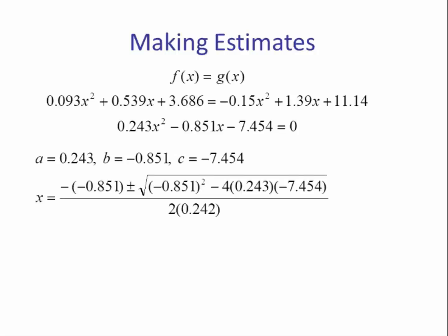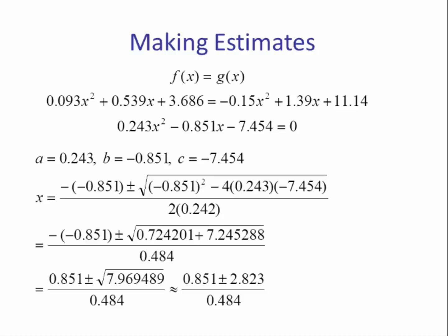Plugging these into the quadratic formula, we end up with the expression 0.851 plus or minus 2.823, all divided by 0.484. Splitting this up, we get a value of negative 4.1 and a value of 7.6.